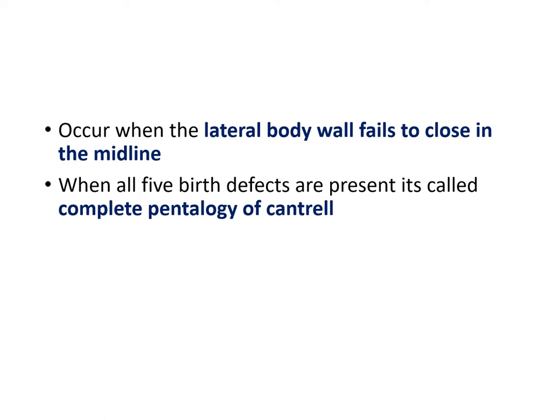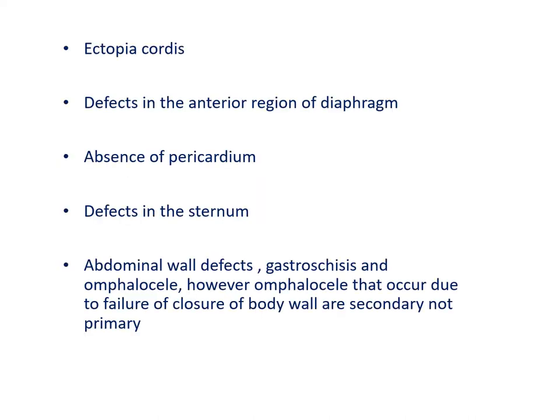When all five birth defects are present at birth, it is called a complete Pentalogy of Cantrell. They include ectopia cordis, a defect in the anterior region of the diaphragm, absence of the pericardium, defects in the sternum, and an abdominal wall defect that includes gastroschisis and omphalocele.